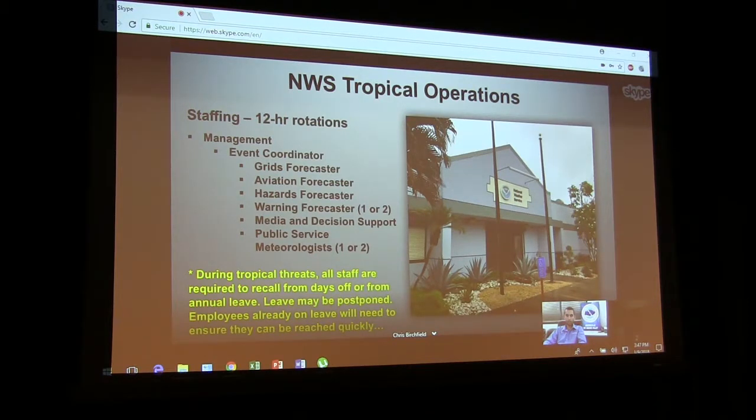So this is a little bit of what we do during tropical operations. Staffing, we immediately go to 12-hour operations, 12-hour rotations, I'm sorry. We have management, obviously, which oversees pretty much the whole event. And then we even have an event coordinator throughout operations to make sure everything runs smoothly, we're consistent, etc. If staffing is sufficient, we will have somebody doing the forecast grids, we'll have somebody doing the aviation, the hazards, including hurricane warnings, storm surge warnings, etc. And we may have one or two warning forecasters to look for the potential for water spouts or tornadoes. And then also we'll have somebody doing decision support, working with emergency management and the local media markets. In addition to that, we'll have public service meteorologists which handle some of the social media, some of the short-term products, and also release some of our special weather balloons.